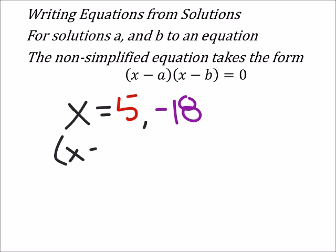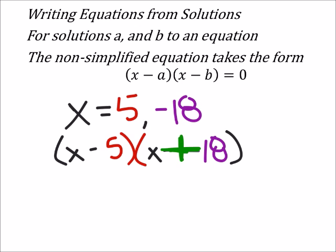So if I want to write the equation for these, I would have x minus whatever the x is, 5, and then in the other equation I've got x minus what would be a negative 18, but since I'm subtracting a negative I just would make that a plus formally. And this is equal to zero, but this is simplified.